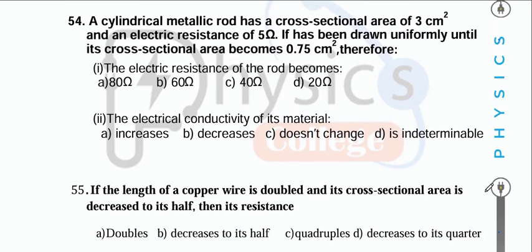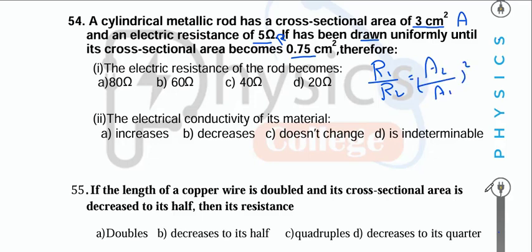A cylindrical metallic rod has cross-section area A1 = 3 cm² and resistance R1 = 5 Ω. It is drawn uniformly until A2 = 0.75 cm². Using R1/R2 = (A2/A1)², R2 = 80 Ω. Regarding electric conductivity: the material and temperature were not changed, so conductivity doesn't change.